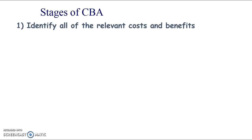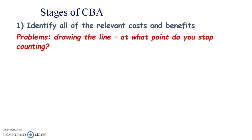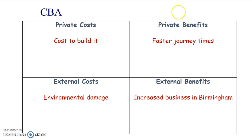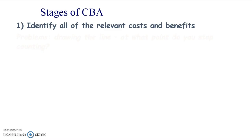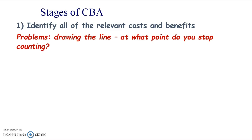The stages of carrying out cost-benefit analysis: first, you have to identify all the relevant costs and benefits. However, each stage has problems. Where do you draw the line? What point do you stop counting? It's not just about how far you look for external benefits and external costs — it's also how far into the future you look. If you're counting that external benefit of increased business in Birmingham, for how many years? Think about our railways — Victorian creations. It's really very hard to draw the line in terms of what timescale you're looking at the benefits accruing, and also how far you're looking at external costs and benefits.